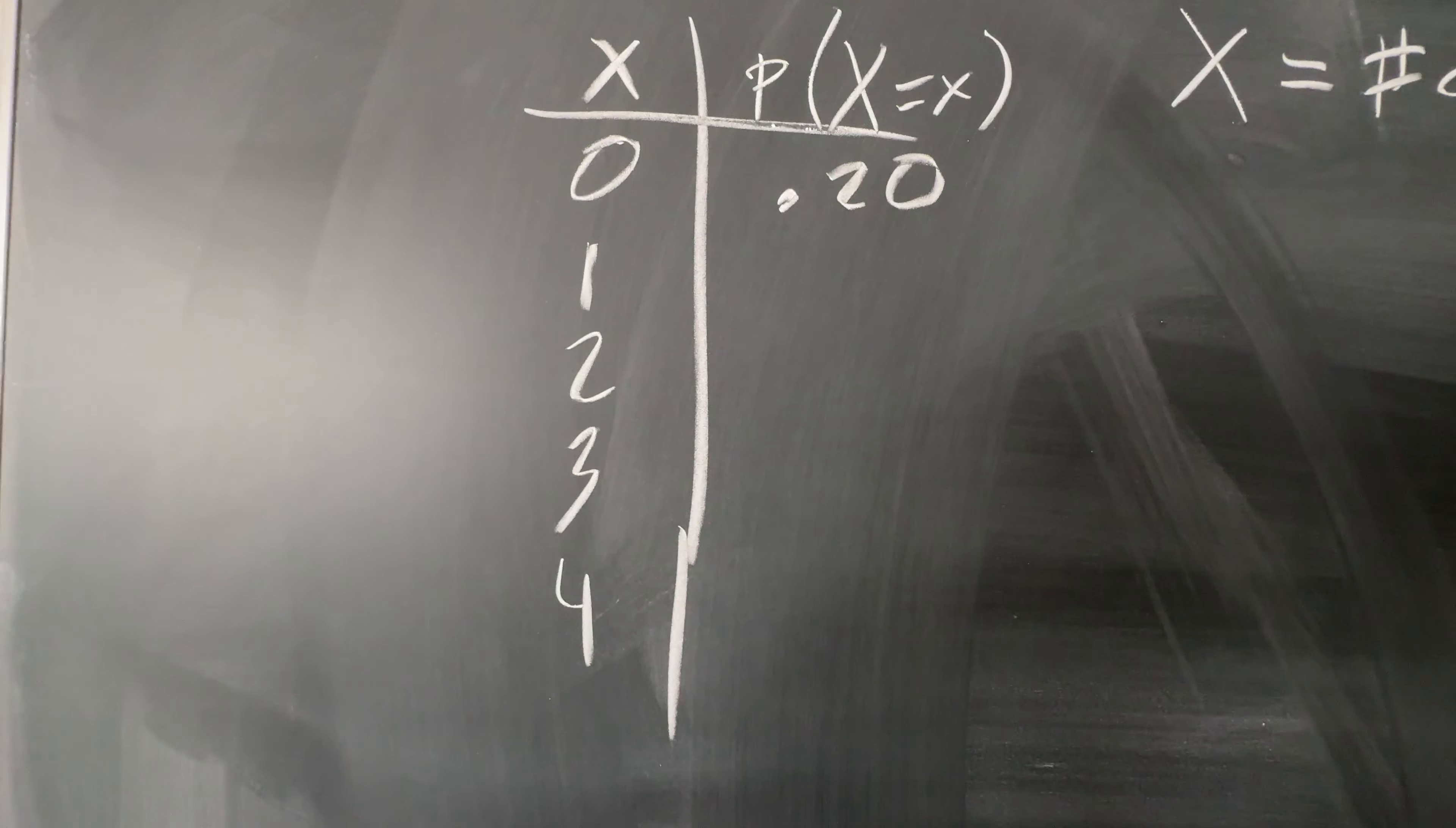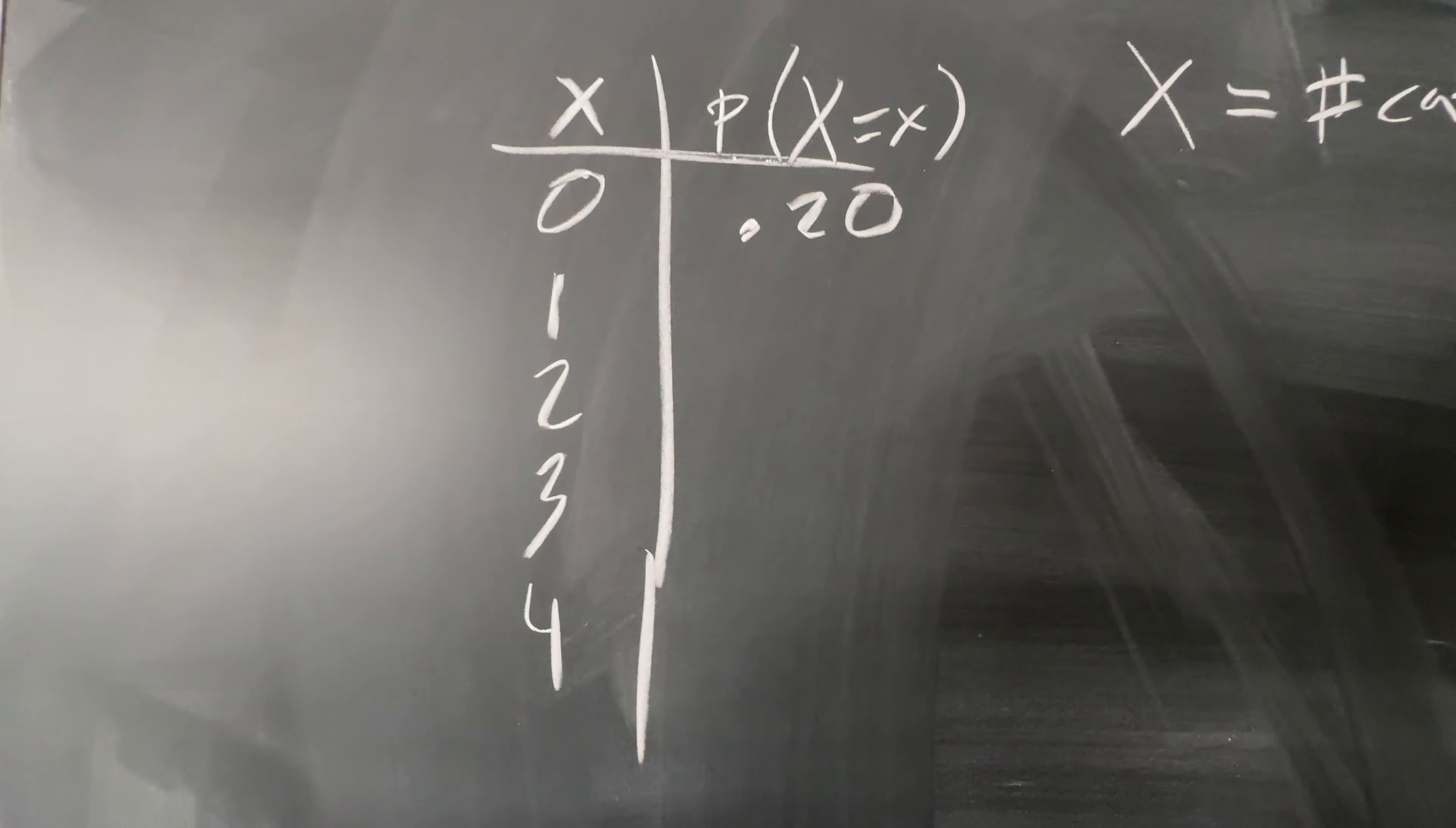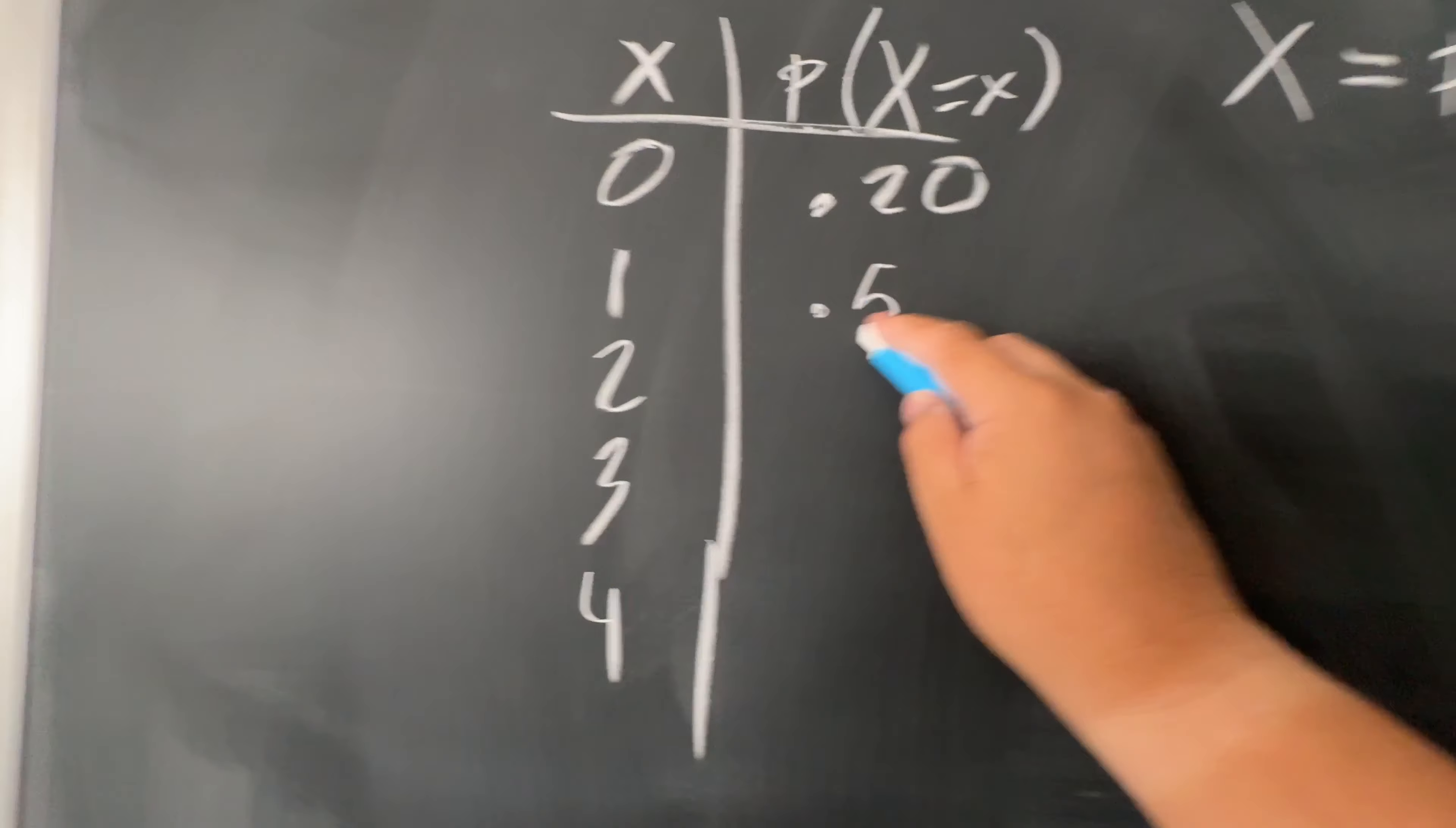Then you talk to a bunch of people and you find out that at random, what's the probability of a person having one cat? We'll say 0.50.